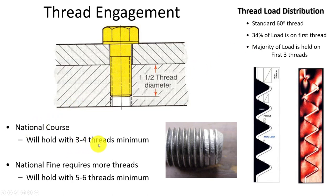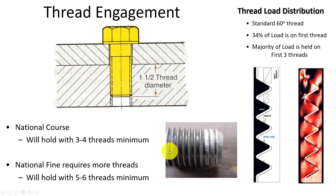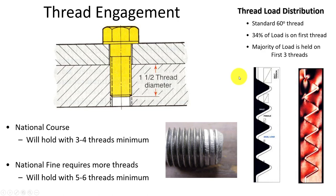A coarse thread typically takes three to four threads of engagement for full strength. On a fine thread it's usually seven to eight - some sources say five to six, but seven to eight is typical. When we look at the thread load distribution on a standard 60-degree thread, the majority of the load is carried by the first thread - about 34% - with reductions all the way down to about the fourth thread. The rest of the threads really don't carry much. We can look at a stress plot to see that happening, with the majority of the load carried by the first three threads.